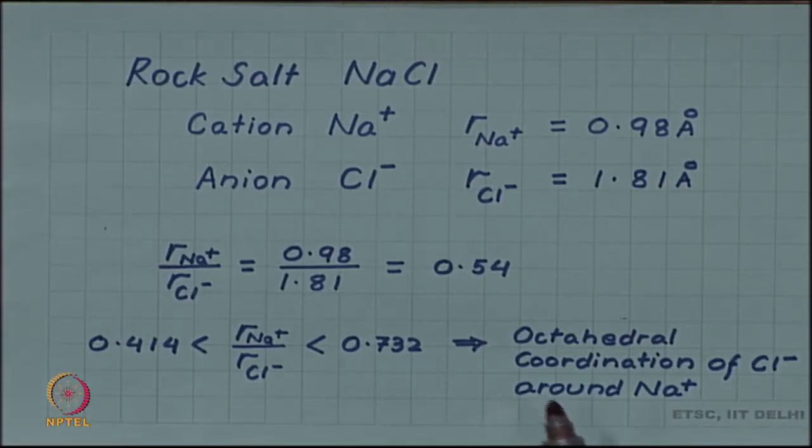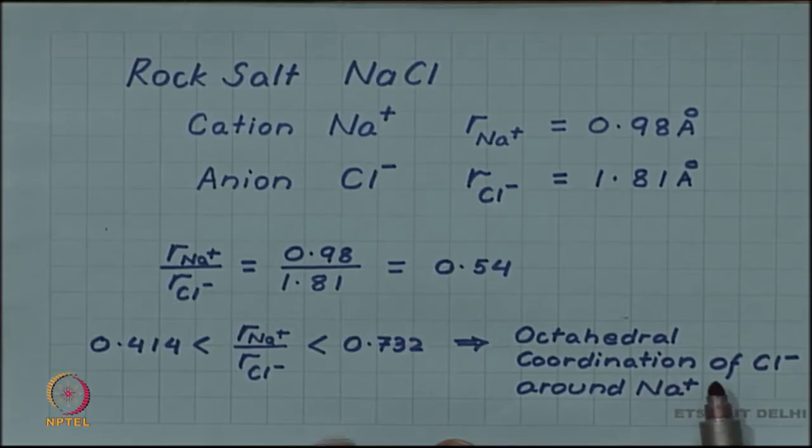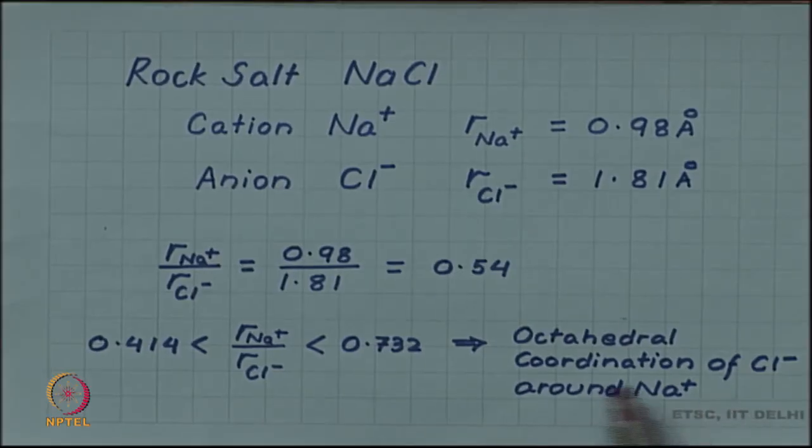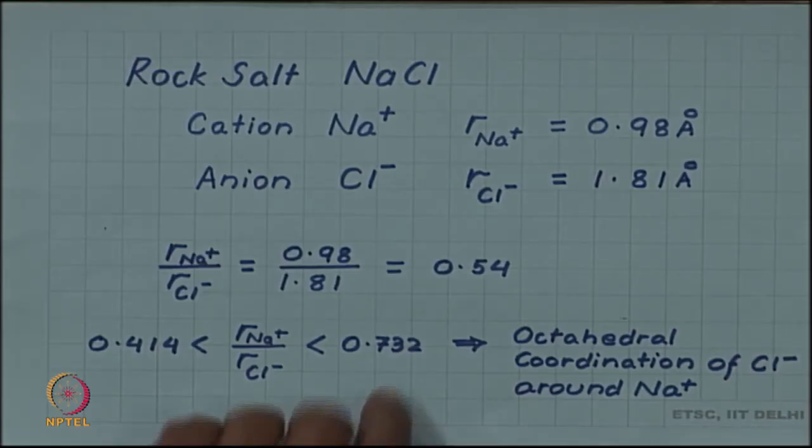This implies that there will be an octahedral coordination of chloride ions around Na+. Octahedral coordination means there will be 6 chloride ions around a single sodium ion.